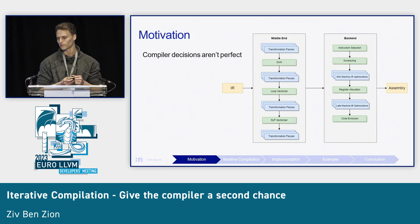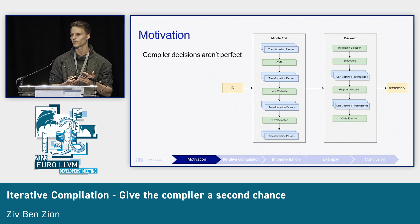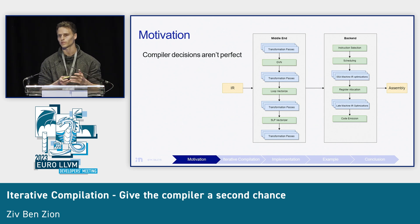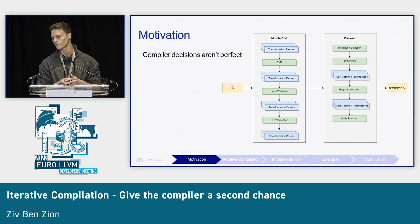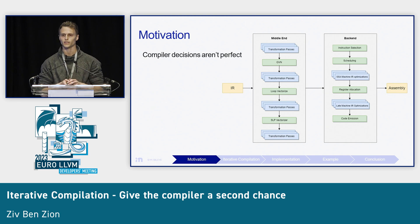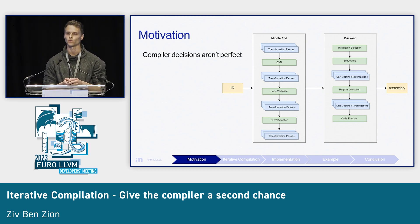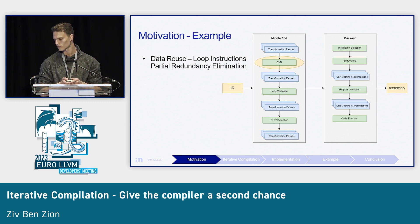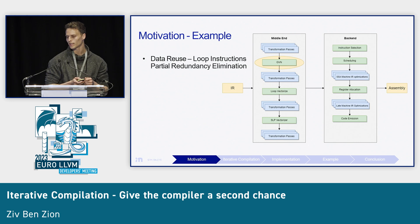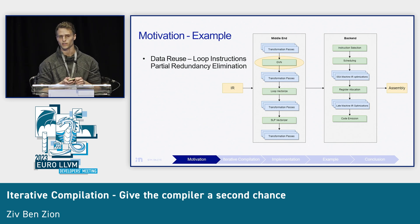A quick motivation here is that compiler decisions aren't perfect. I'm sure you are already familiar with it. There are many steps in the compilation flow, and determining whether a specific decision at a specific decision point is the optimal one is a very challenging task. I would like to showcase that using two examples.